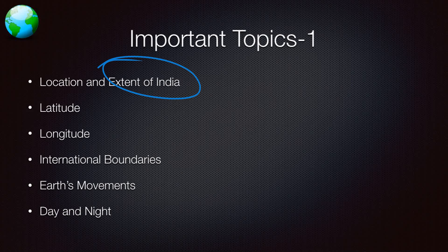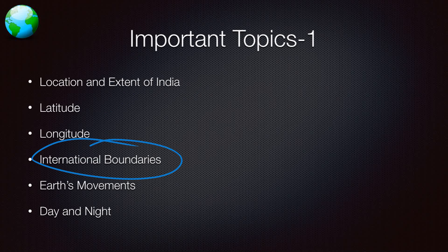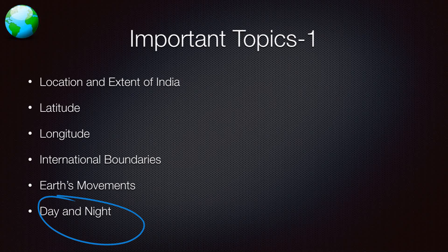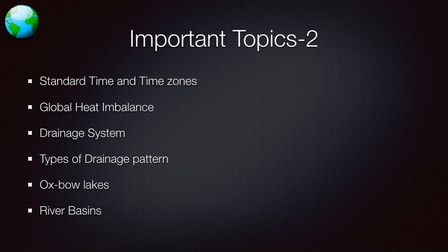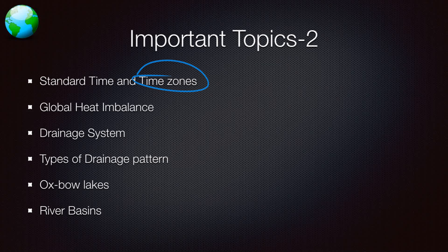Important topics include location and extent of India — like latitude, longitude, etc. — the solar system, and the planets. Latitude, longitude, international boundaries — like which countries share a land boundary with India — Earth's movement, day and night, standard time and time zones, how they are divided, whether you gain time or lose time.